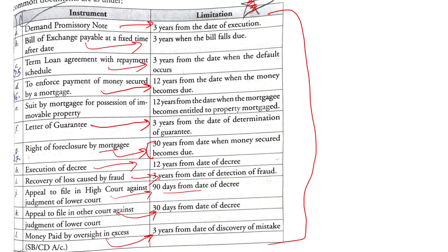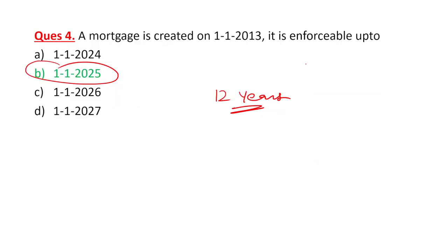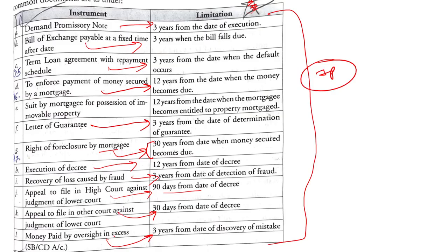For example: if a bank credited excess money — say 10-20 lakh rupees — into a person's savings bank account by mistake, and they discovered it, but didn't claim the money for 3 years, after that they have no right to claim it. So remember this Limitation Act table — most questions in the paper come from this table. Please pause and read it carefully; we will definitely provide it in the notes in a good format.